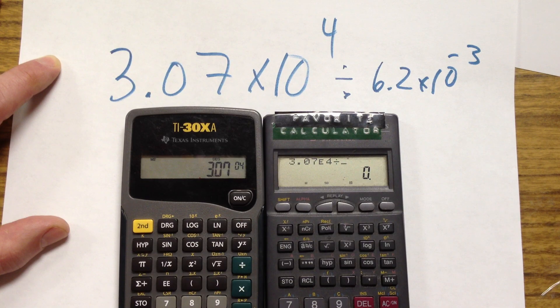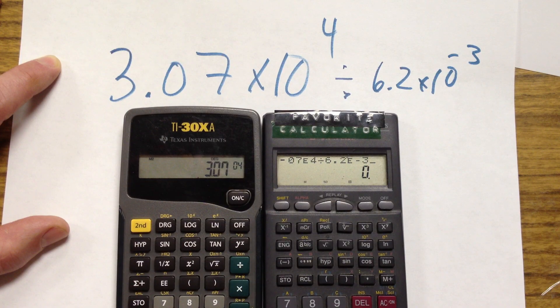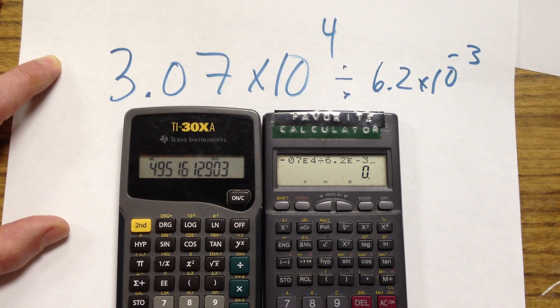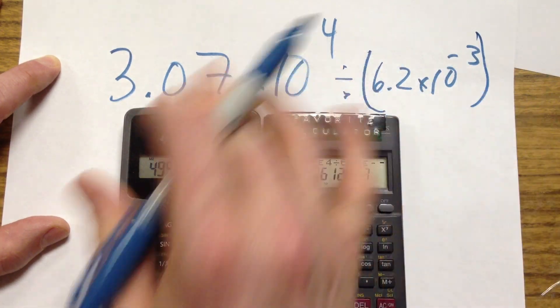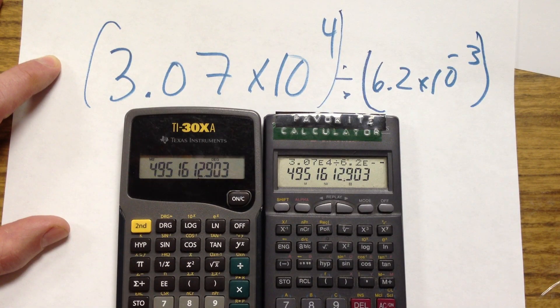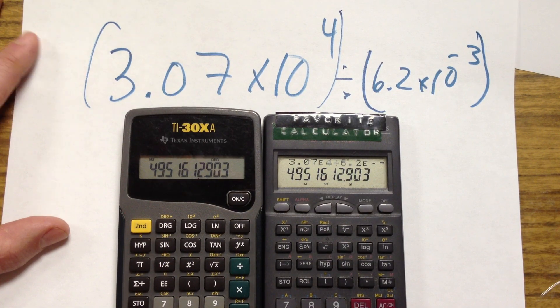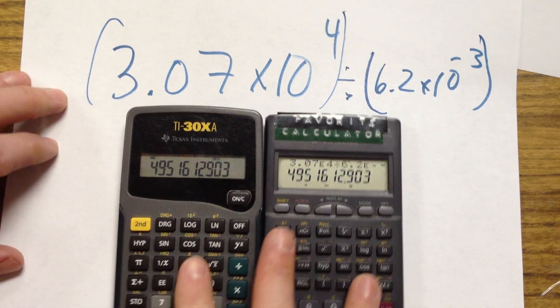You can just put the first number in, 3.07 times 10 to the fourth. By the way, some models of the TI, you have to actually hit the second function to get to the EE, to get to the scientific notation. I find that annoying. But anyhow, you have that. Now you hit divided by 6.2 times 10 to the negative third. Do that over here. Divided by 6.2 times 10 to the negative third. And I hit equal on both of those and I get the same number. That's good. Got the same number. Notice that I didn't put in parentheses. Probably should have. But on these calculators, when you're in scientific notation, it knows that you're in scientific notation. And it groups those together like you're thinking.